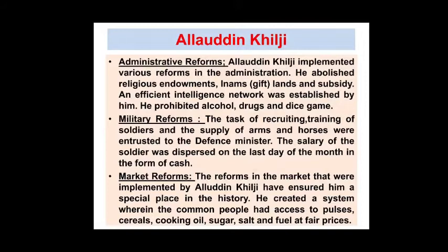Alauddin Khilji prohibited alcohol, drugs, and dice games, and banned associations among his sardars and lieutenants. He implemented agricultural reforms — big landlords had to pay taxes, and he appointed revenue officials to collect fixed taxes from farmers. He also reformed the army: soldiers were given training, their salaries were disbursed on the last day of the month in cash, and individual records of soldiers were created based on their physical features.